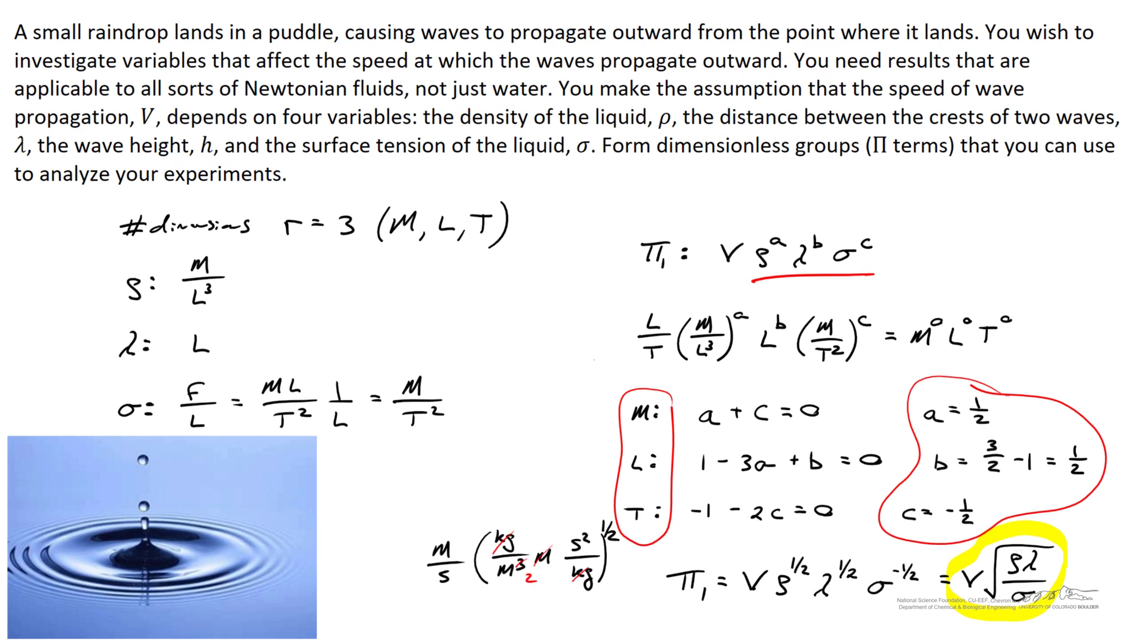So when we work our way through it, we're taking the square root, essentially, of seconds squared per meter squared, and that's going to cancel directly with meters per second. So this pi term is indeed dimensionless.